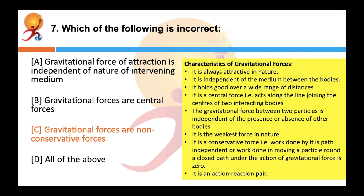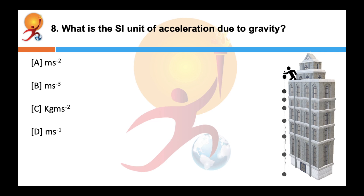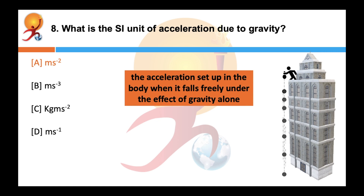Gravitational force is also an action-reaction pair. The SI unit of acceleration due to gravity is meter per second square. Acceleration due to gravity is the acceleration set up in a body when it falls freely under the effect of gravity alone.